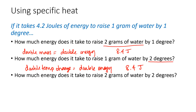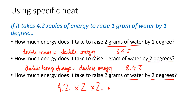How about this scenario? What if we use 2 grams of water, so we're doubling the mass, and we're changing it by 2 degrees, so we're also doubling the temperature change. If you had to imagine how much energy that would take, well, I'd probably have to double 4.2 twice, because I've got double the mass being heated and I'm changing the temperature by double the amount. So if we think about what that would look like mathematically, I'd take 4.2 and double it and then double it again, giving us 16.8 joules.